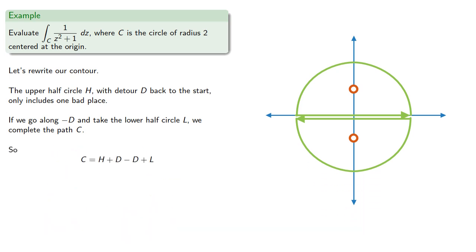So our contour here can be written as H plus D minus D plus L, and H plus D, negative D plus L are contours that only include one bad point.